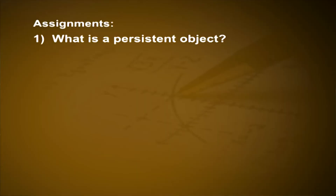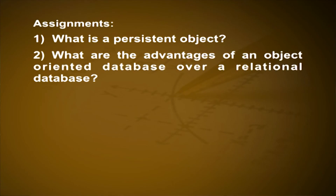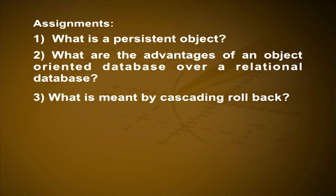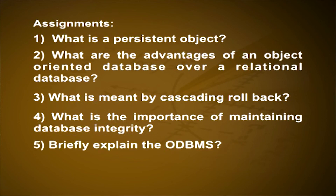Before attending the next unit, please try to answer the following questions: What is a persistent object? What are the advantages of an object-oriented database over a relational database? What is meant by cascading rollback? What is the importance of maintaining database integrity? Briefly explain the ODBMS. Write a note on OQL.